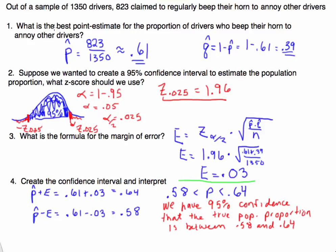Given that our sample was 1,350, we're going to use that to calculate a point estimate. This p-hat is telling us 823 drivers claim to beep their horn regularly to annoy other drivers. Out of the 1,350, when we calculate that to a decimal form, it's approximately 0.61. So we would say this is the best estimate for the population, even though it's just the sample.